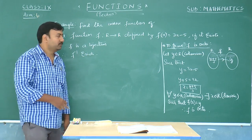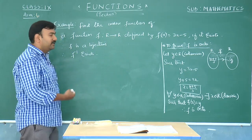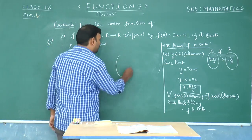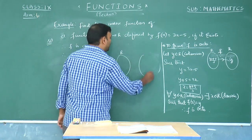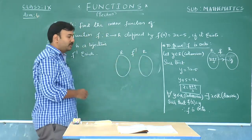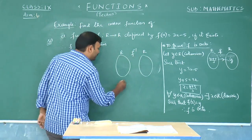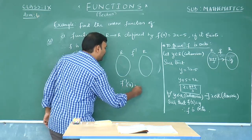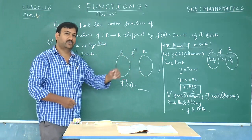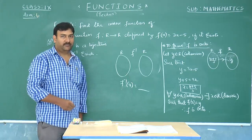Now, what you are supposed to do? He asks you to find the inverse function. Finding the inverse function means finding the image rule for the inverse function. As you know, the domain was ℝ in f and the codomain was ℝ. In the inverse function, the domain and codomain will be interchanged, but still remain as domain ℝ and codomain ℝ. Now, I need to find the image rule for f inverse.